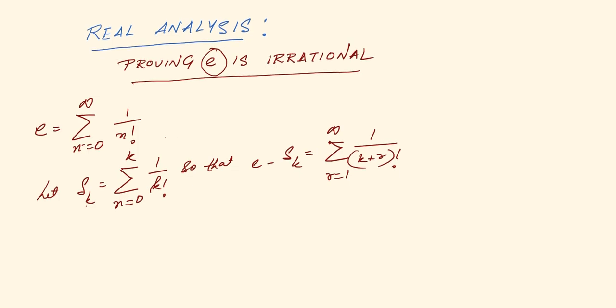So we can say that now e minus S_k lies between - this is obviously greater than 0 and this is less than 1 by k plus 1 factorial, and this is multiplied by 1 plus 1 by k plus 1 plus 1 by k plus 1 whole square plus dot dot dot like so.